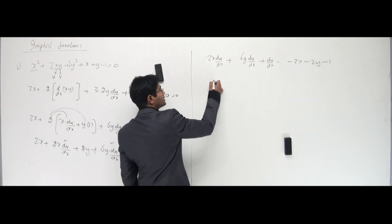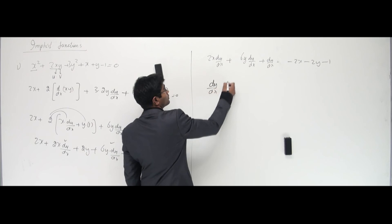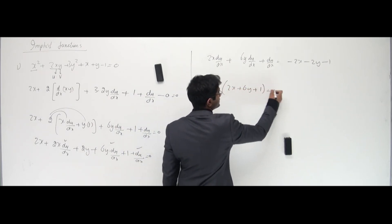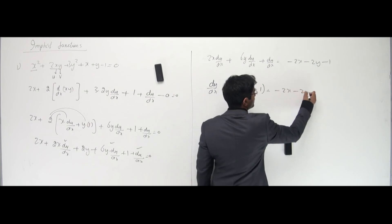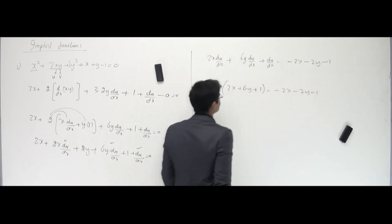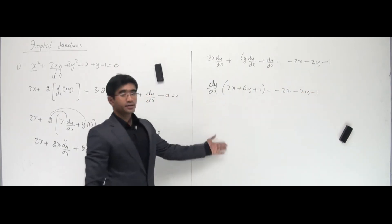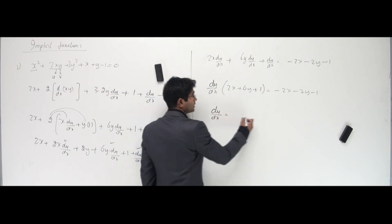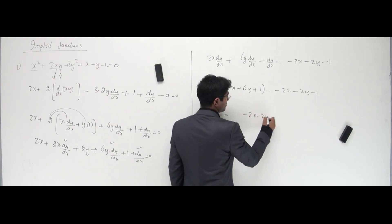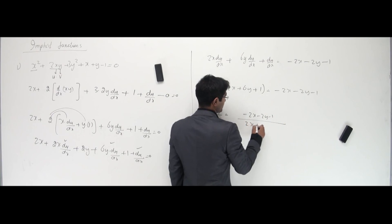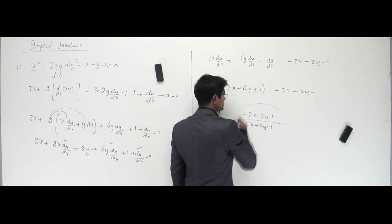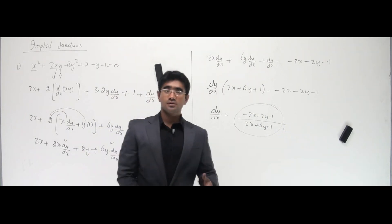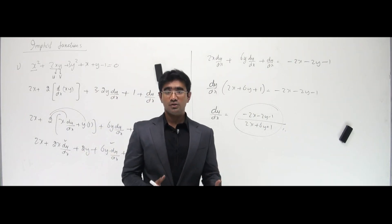Taking dy/dx common: dy/dx times (2x + 6y + 1) = −2x − 2y − 1. So dy/dx equals (−2x − 2y − 1) divided by (2x + 6y + 1). That's your answer. Let's do a couple more problems based on implicit functions.